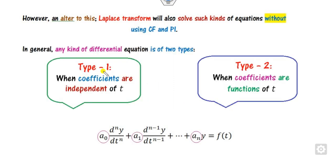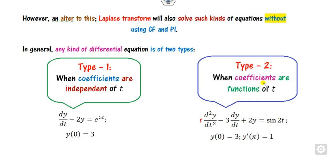There are basically two kinds of differential equations. The first one is whenever these coefficients are independent of the independent variable. The second type is when these coefficients are functions of the independent variable. You can see these coefficients are constant in type 1, while in this case the coefficient is not a constant. In this lecture we will see how you can solve type 1.